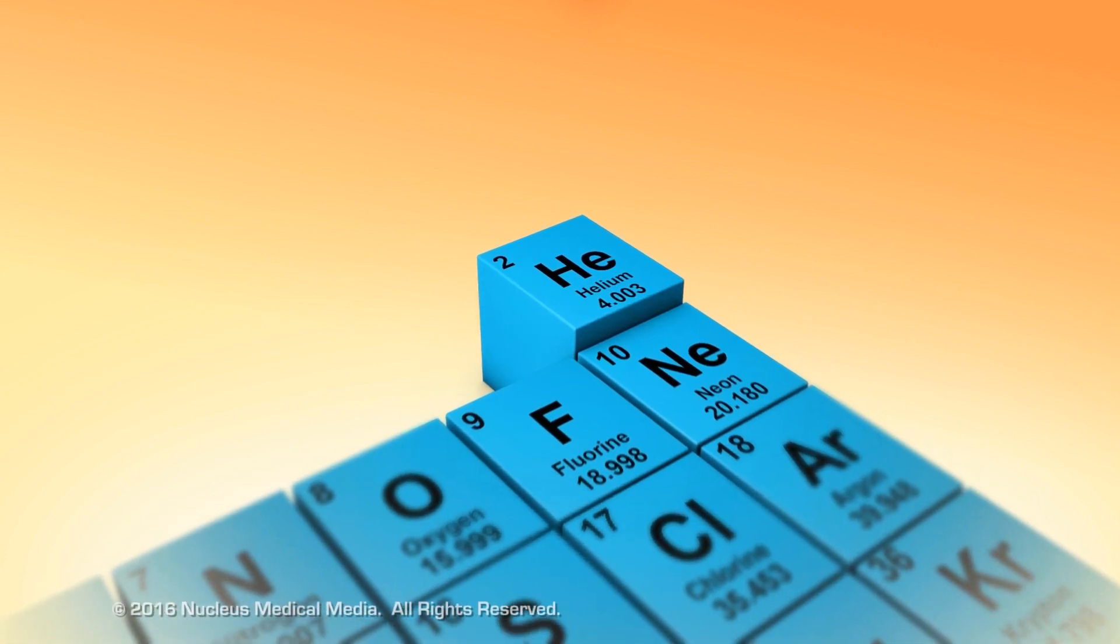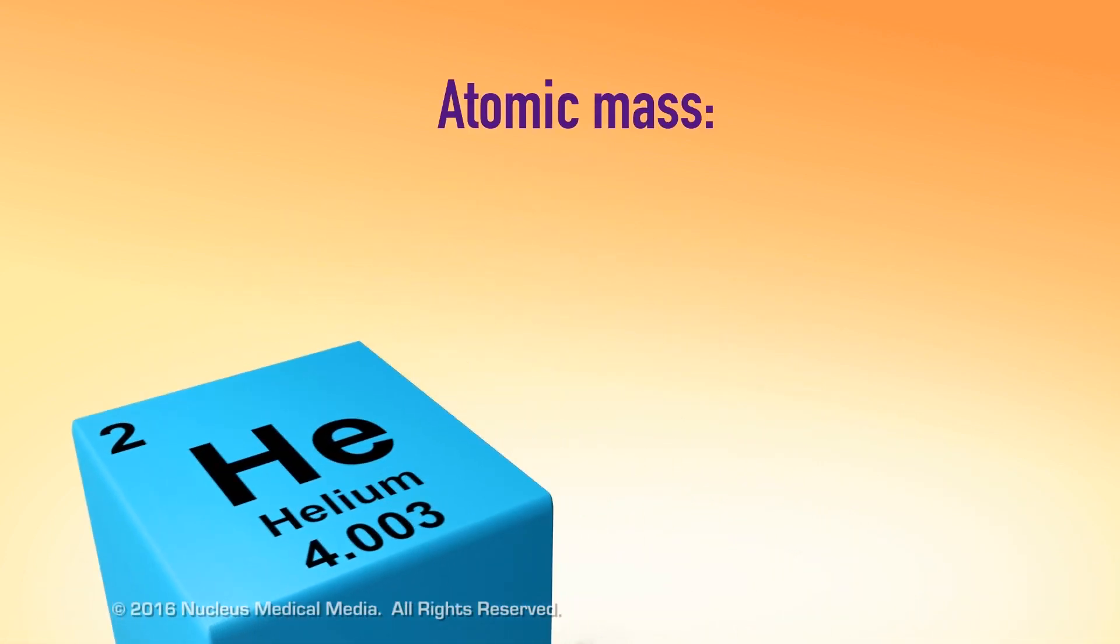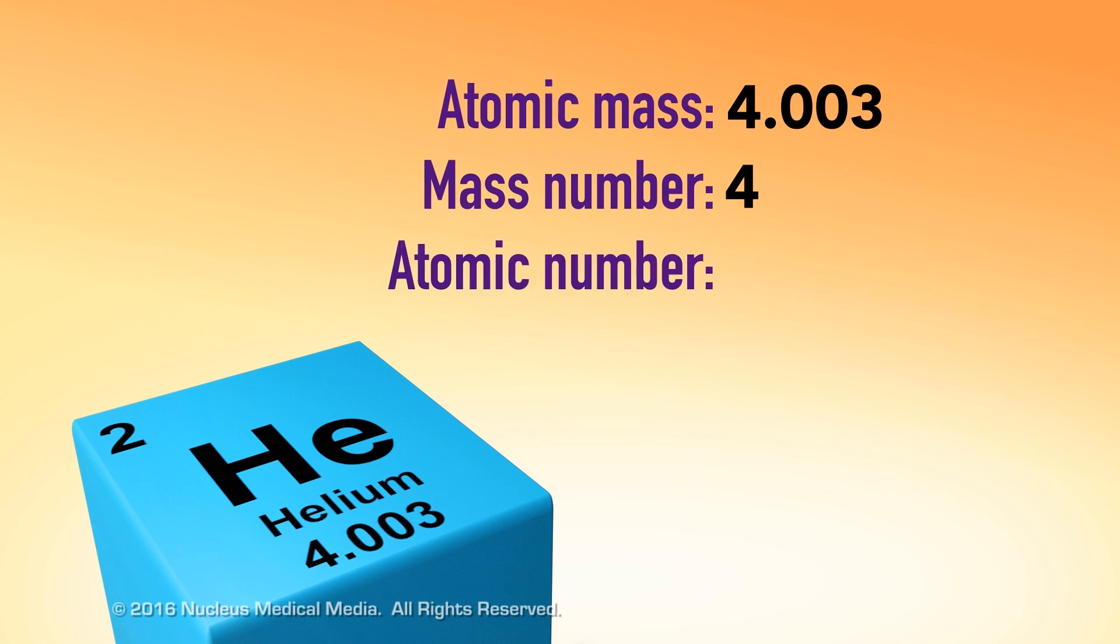Let's look at some examples from the periodic table. Helium has an atomic mass of 4.003. We can easily round that down to get a mass number of 4. We can also see that helium's atomic number is 2,